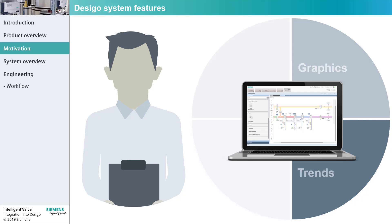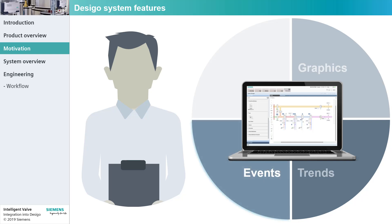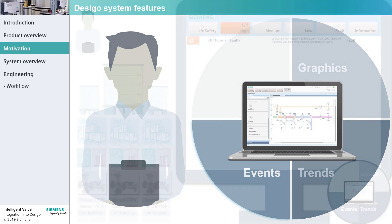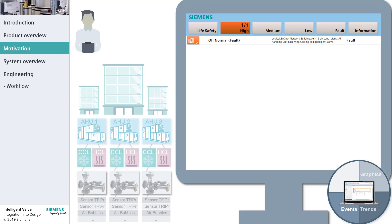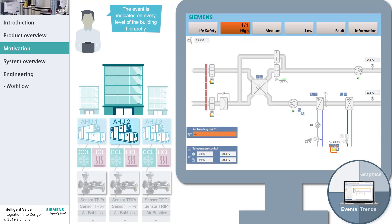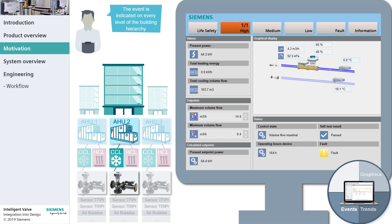The trend application provides Mike with a precise performance evaluation, allowing him to take specific action to optimize power consumption. The event application supports Mike with fast troubleshooting. When an event occurs in the building automation system, the system notifies Mike and supports him in the investigation of the root cause. Through event propagation, Mike sees the event indicated on every level of the building hierarchy and is directed to the source of the fault.